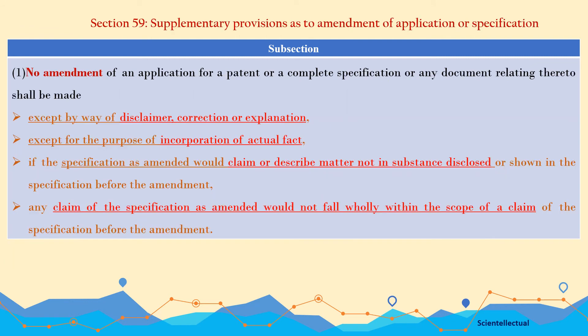Let's discuss Section 59: Supplementary Provisions as to Amendment of Application or Specification. Subsection 1: No amendment of an application for a patent or complete specification or any related document shall be made except by way of disclaimer, correction, or explanation, or except for the purpose of incorporation of actual fact. If the specification as amended would claim or describe matter not disclosed or shown in the specification before the amendment, or any claim of the specification as amended would not fall within the scope of the claim of the specification before the amendment, that is not allowed.